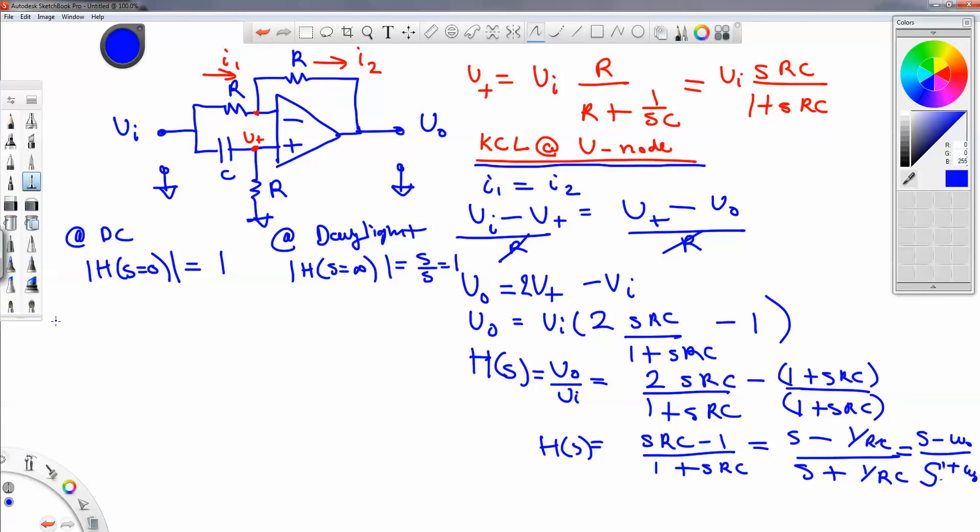Now let's look at the phase. Now let's change color to orange. So to find the phase, let's let s equals to j omega. So we substitute s for j omega.